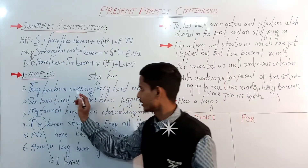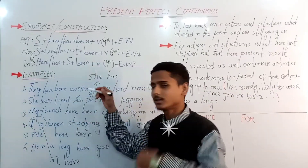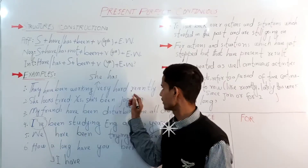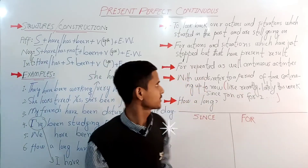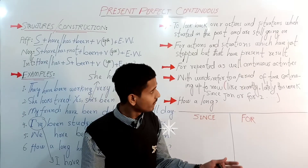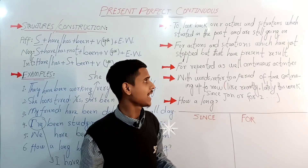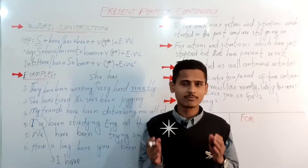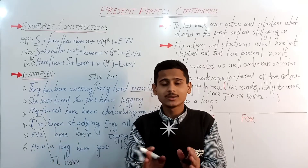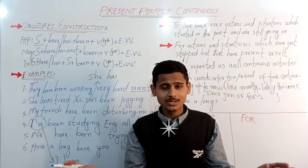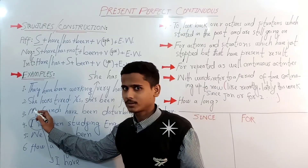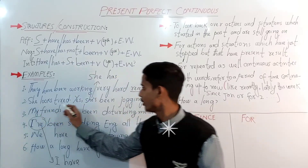The typical example for the first usage is: 'They have been working very hard recently.' Their working started in the past and is still continuing. 'Recently' is the adverb here. The second usage is: we also use present perfect progressive for actions and situations which have just stopped but have a present result.